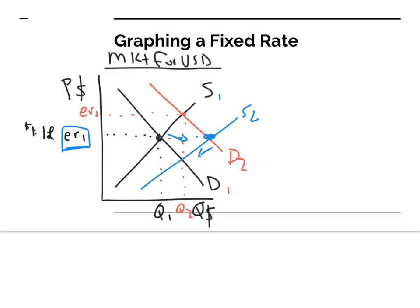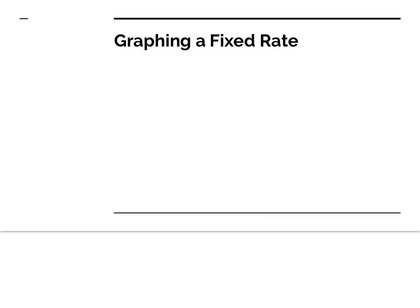That becomes problematic because there are a lot of moving pieces in the economy, and getting back to exactly 1-to-1 is going to take a lot of work and manipulation. It's a pretty inexact science and lots of things can affect the exchange rate.